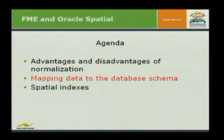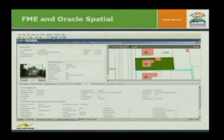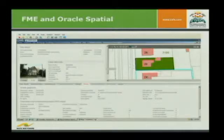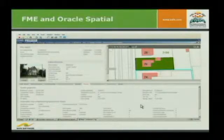Let's move into the second part of the agenda: mapping data to database schemas. I want to use this example — a screenshot of a application called Stromline — which is about streamlining data from a central database to the people of local communities. Here you see a graphical part, so we store spatial data and a whole lot of non-spatial data in the same database.